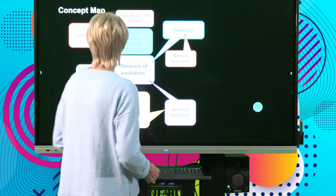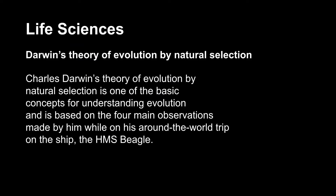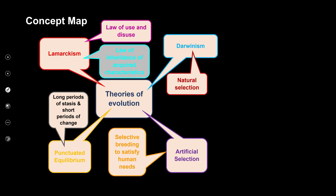Welcome back from the break. I hope you had time to stretch your legs and get something to drink. Let's carry on and have a look at our next theorist: Darwin. His theory is called natural selection, which already tells us that there are factors from the environment that would affect it.